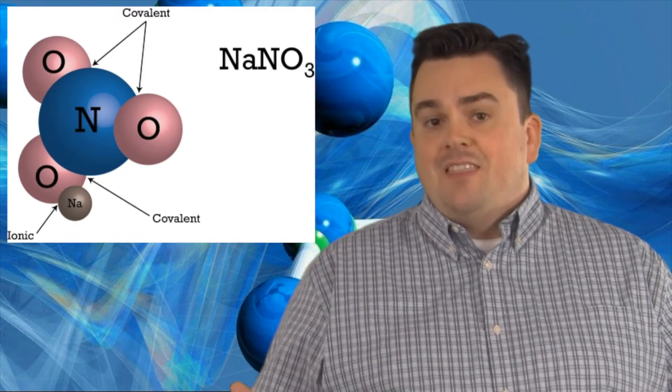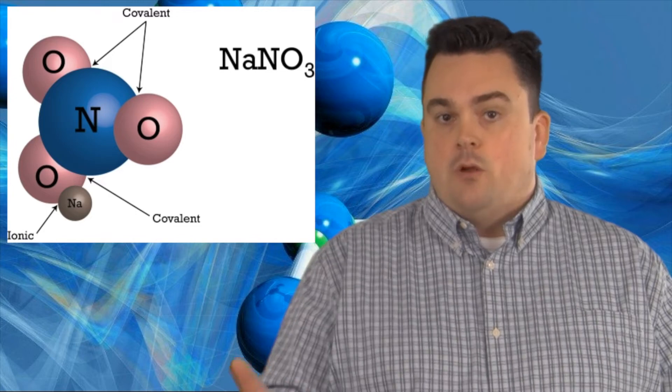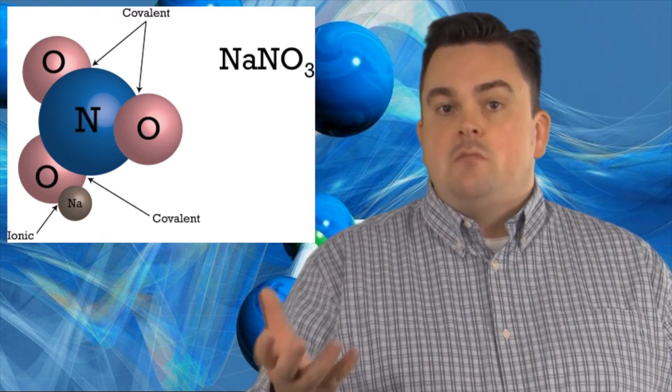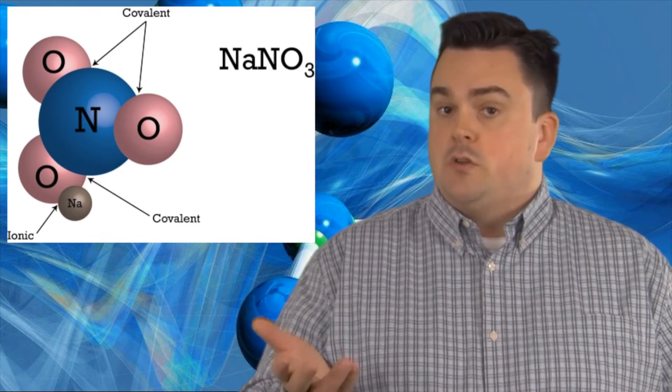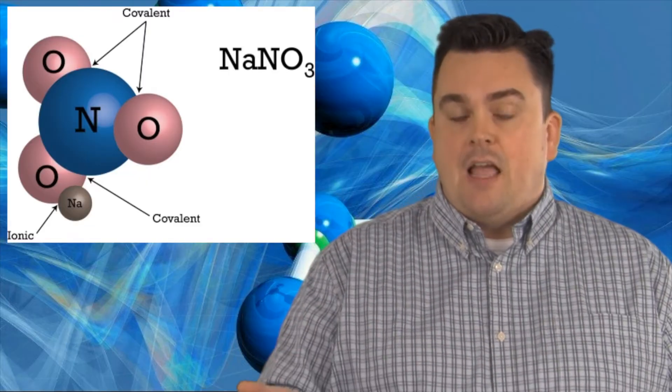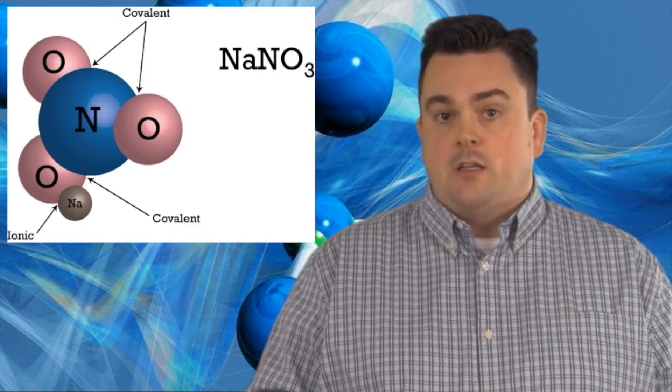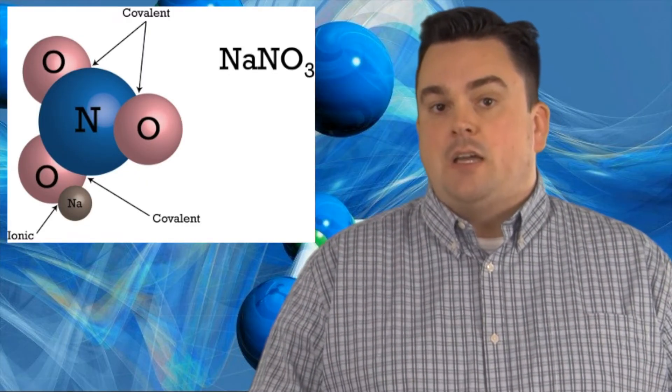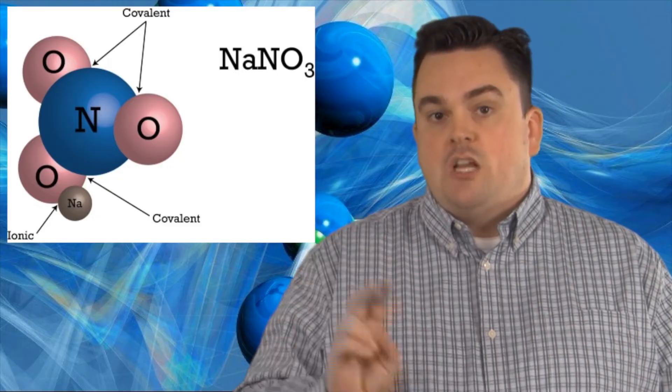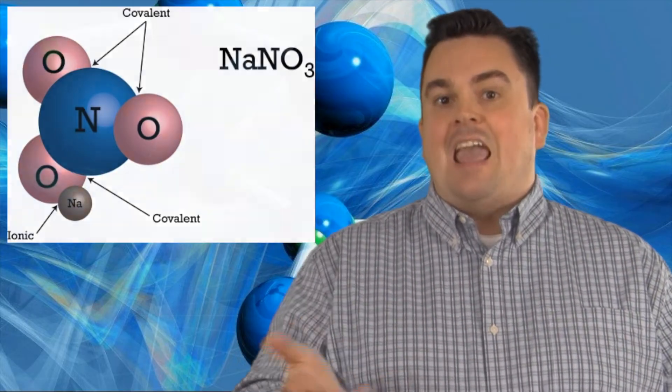Within the polyatomic ion, the NO3, we have nitrogen bonded to oxygen. Those are two nonmetals, and when that happens, I've got covalent bonding. So when you see a polyatomic ion, you have two types of bonding, ionic and covalent.